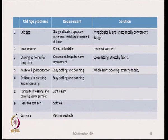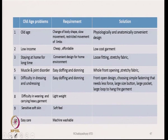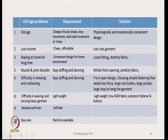The next requirement is easy doffing and donning — therefore what we need is a whole front opening type and stretchy fabrics. For easy doffing and donning: front open design, choosing simple fastening that needs less force, large size buttons, large pockets, large loops to hang the garment — these have to be incorporated into the design. Then lightweight — that is low GSM fabric and polymeric fasteners and buttons, because polymeric materials are low density, so overall weight will go down compared to metal buttons.